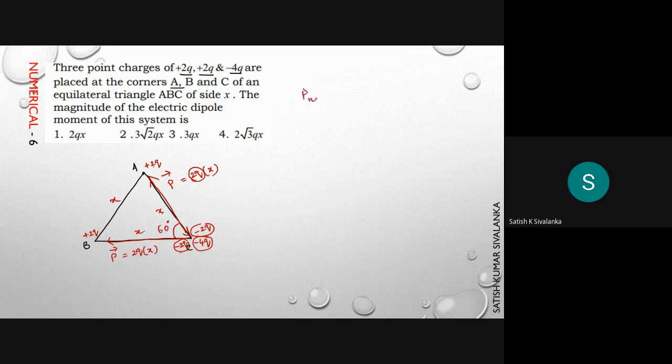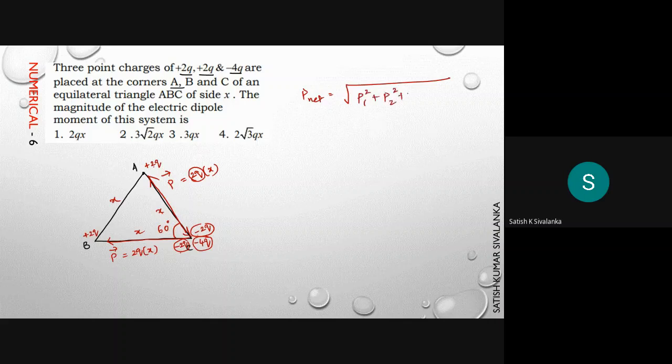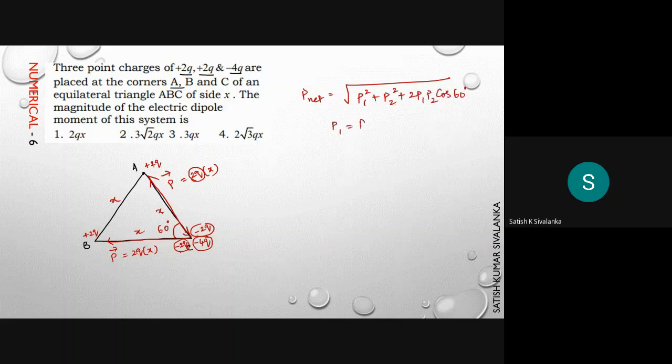Therefore, the net dipole moment is equal to square root of p₁² + p₂² + 2p₁p₂ cos60°. Here p₁ and p₂ are equal to 2qx. Let it be p.